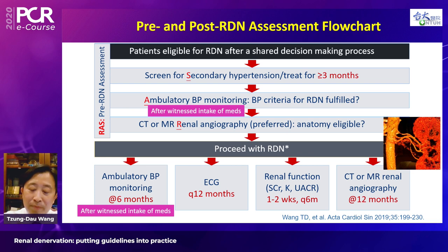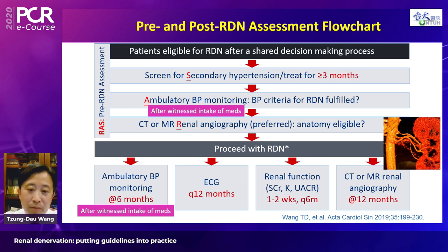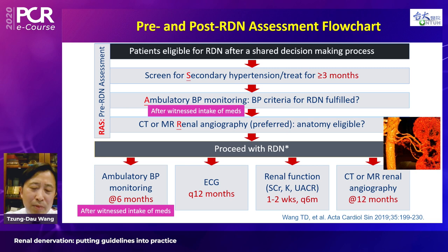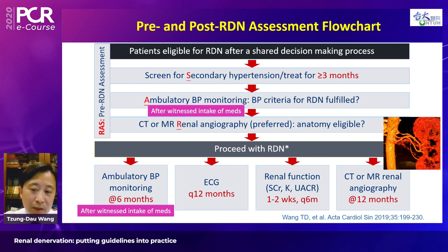The workflow begins by identifying and treating secondary hypertension. If blood pressure remains uncontrolled, ambulatory monitoring confirms whether there is daytime, nighttime, or masked uncontrolled hypertension. Finally, CT renal angiography is performed, as comprehensive ablation is the key to successful renal denervation.